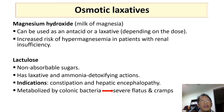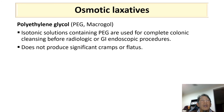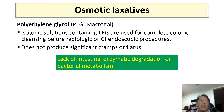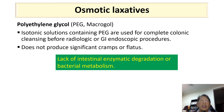Adverse effects of lactulose include severe flatulence and possible cramps. Another osmotic laxative is polyethylene glycol, or PEG. It is normally used to prepare the colon for radiology or endoscopic procedures. It does not produce significant cramps or flatulence compared to other laxatives.